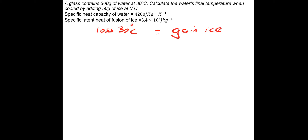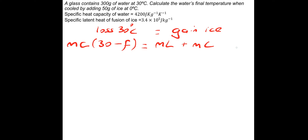So the loss of heat energy from the 30-degree water equals the gain in the ice. The loss is mcΔθ: mass times specific heat capacity of water, times the change in temperature, which is 30 minus some final temperature. The gain has two parts: first, melting the ice — mass times latent heat of fusion L — and then, once it's melted, raising the temperature of the now-zero-degree water: mass times specific heat capacity of water, times the change in temperature. That change is the final temperature minus zero, so we just call it f.